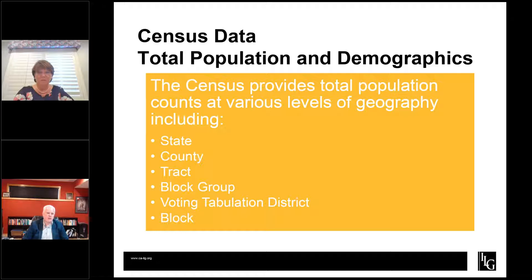Fortunately, California has the statewide database, which has been doing this for years and is very good at understanding this process and translating election results into a format that matches census geography. You may be wondering why we worry about this if we're not supposed to be looking at political impact — but this comes into the voting rights analysis, where we need to look at whether a minority community has the ability to elect their candidate of choice. For that, it's actually very important to have accurately matched election results.